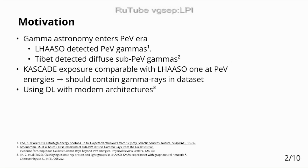Our motivation: gamma astronomy is entering the pevatron era. We have detected pevatron photons, and based on what we know about them, it is expected that CASCADE archive data contains pevatrons as well, because the exposure of CASCADE is about 50% of that of LHAASO. So it is very likely that we could find pevatrons there if we search thoroughly.